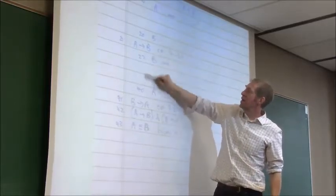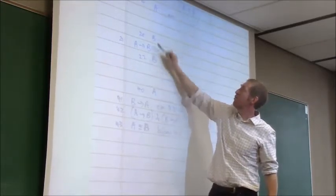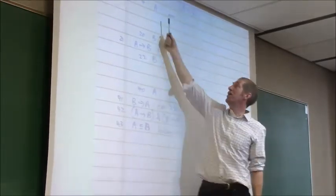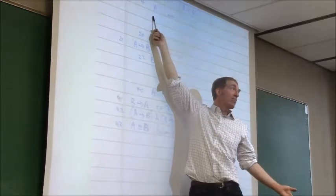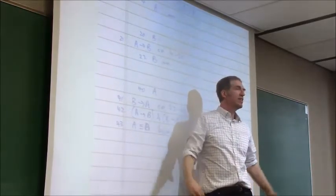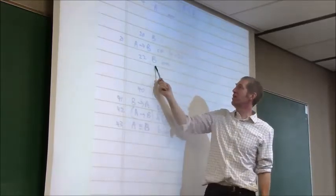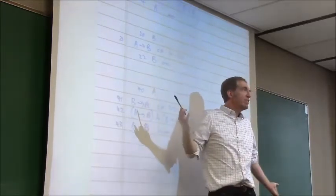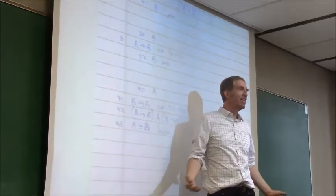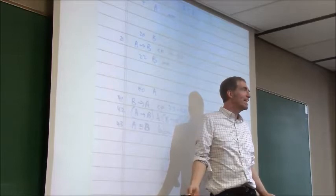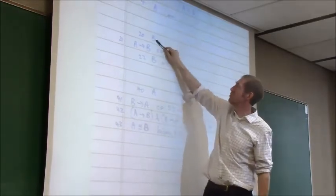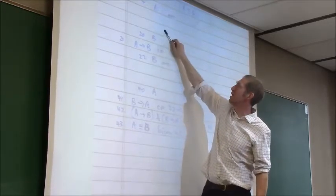Two more steps: conjunction of lines 21 and 41 gives (if A then B) and (if B then A), and then biconditional equivalence gives A if and only if B. You cannot, in this fantasy land, refer to lines in the other fantasy land — they're different. Here you're assuming A — imagining the Allies lost World War II. There you're assuming B — imagining there are still dinosaurs. They're different alternate realities.